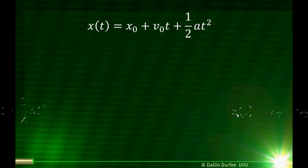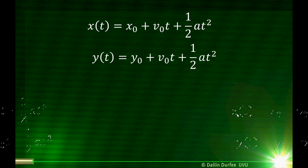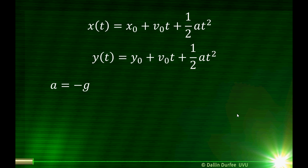Since we're throwing up, we'll convert this to y — I throw them up in the y-direction. Our constant acceleration is going to be negative g, in the downward direction. We want to find the time when y is equal to y-naught. They leave my hand at some height y-naught, and I'm going to catch them at that same height. So I plug in y-naught for y and negative g for acceleration.